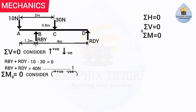Now we consider each force. The first force is 10 N facing downward at point A. Taking moment about B: moment = force × perpendicular distance = 10 × 1.2. This force causes an anticlockwise rotation about B, so it is negative: −10 × 1.2.